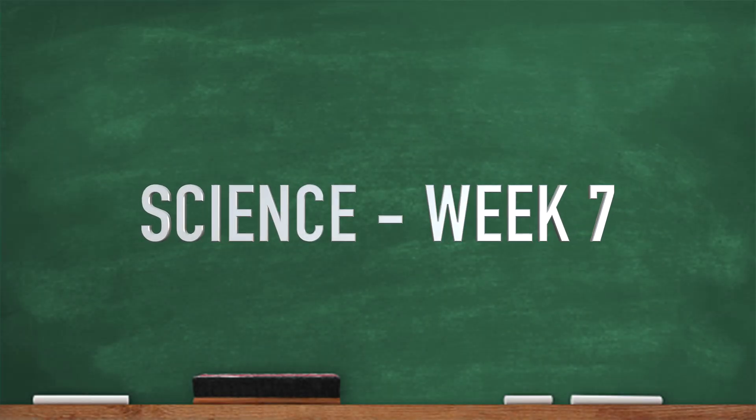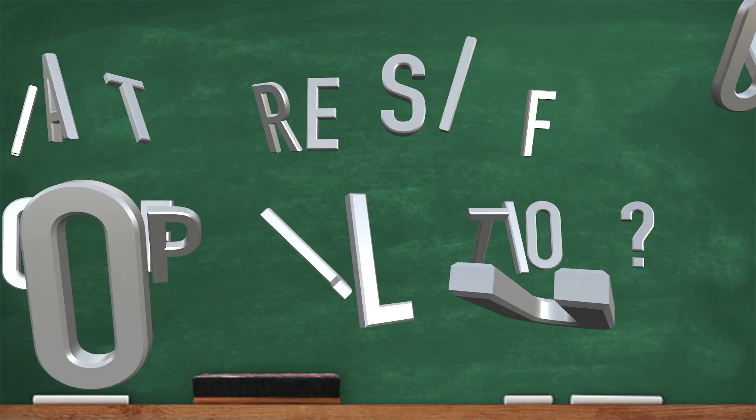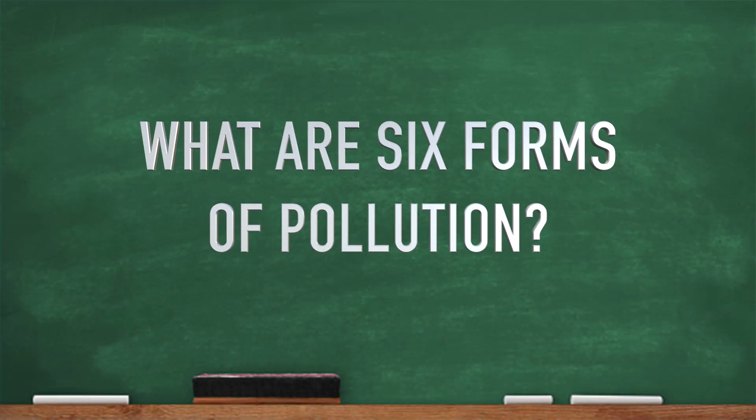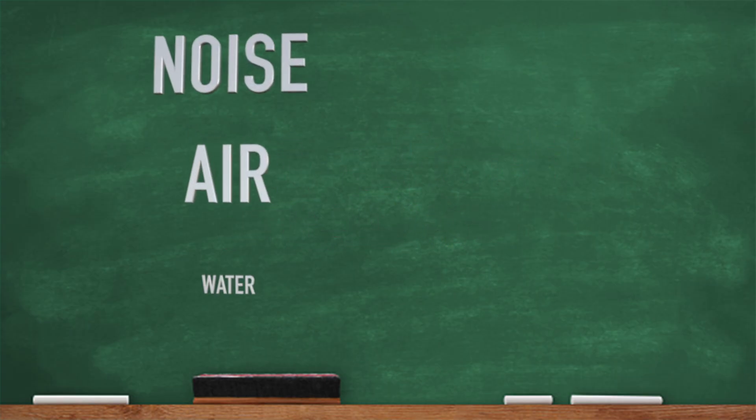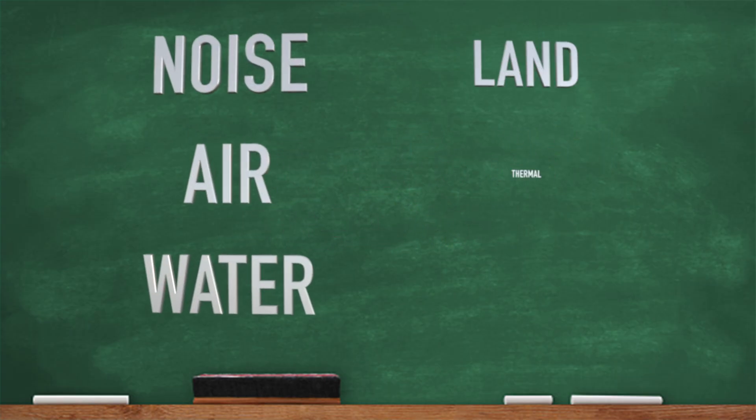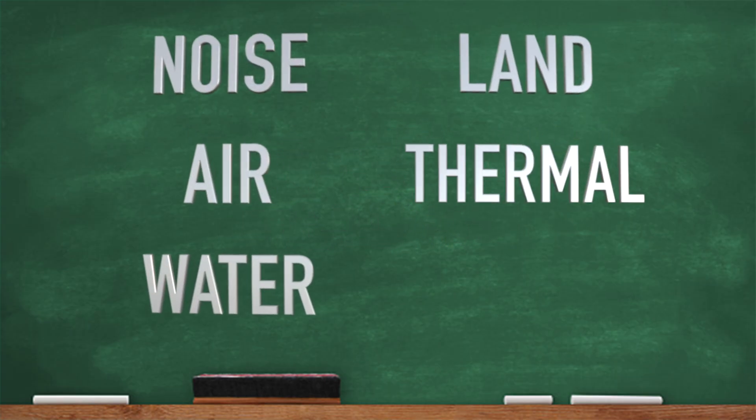Here we go, week seven science. What are six forms of pollution? Noise, air, water, and land, thermal, radioactive.